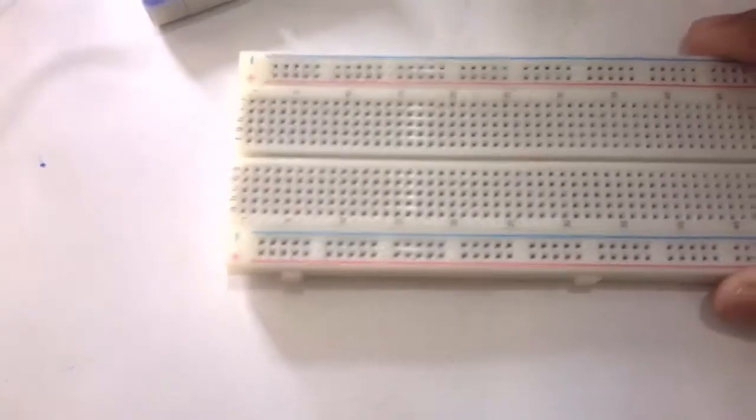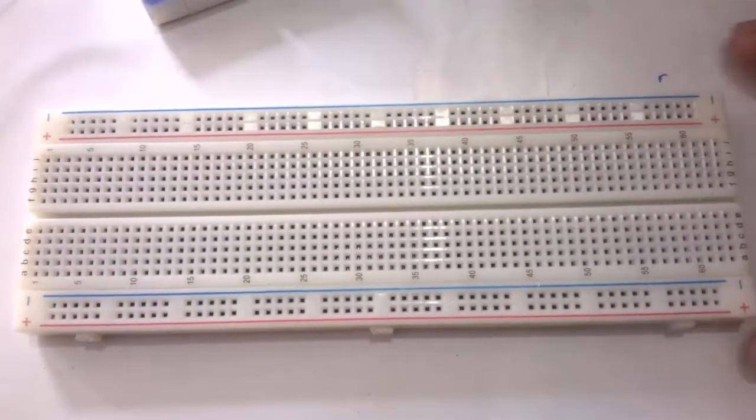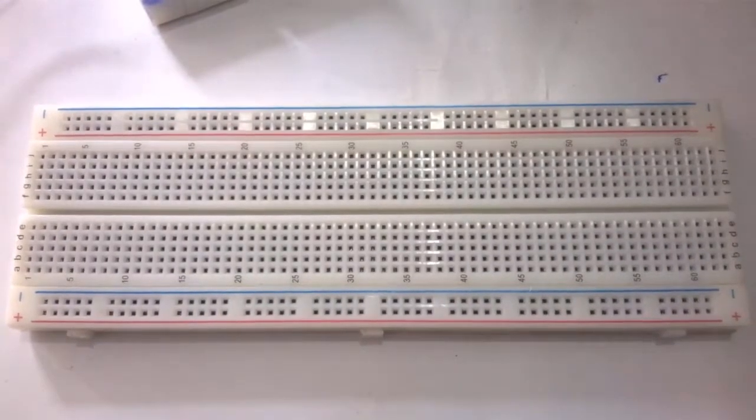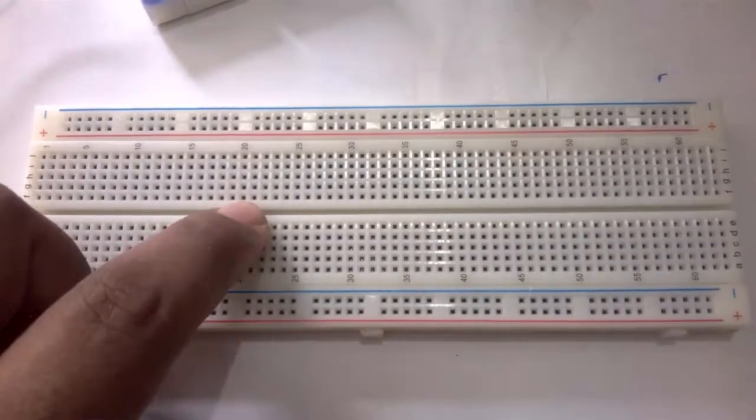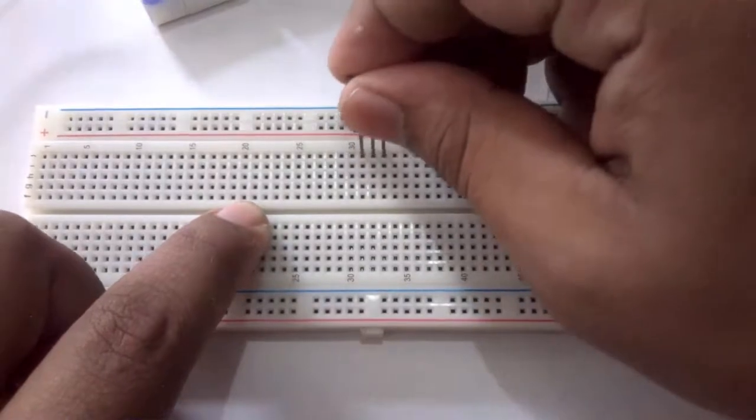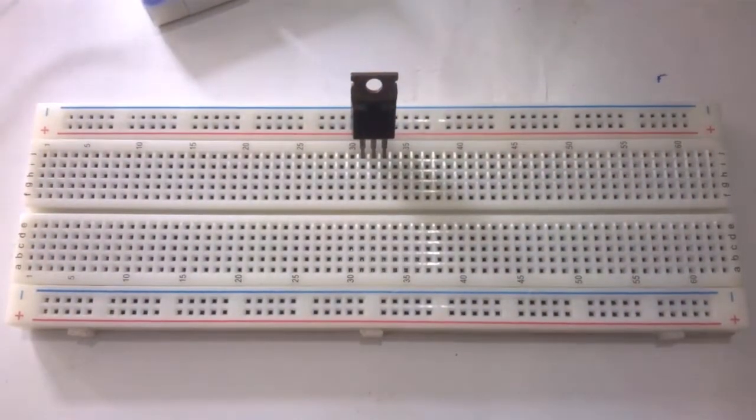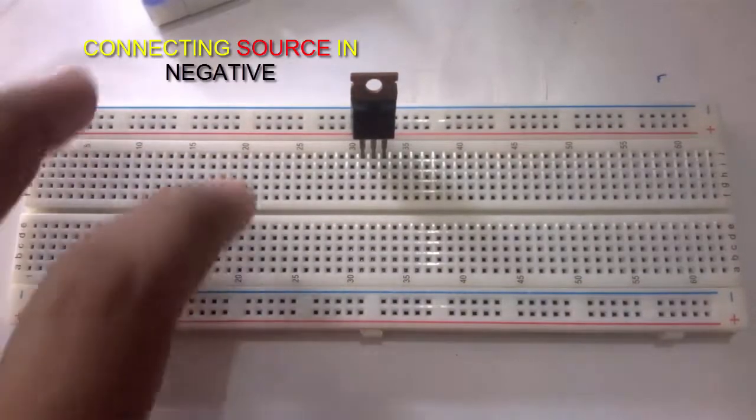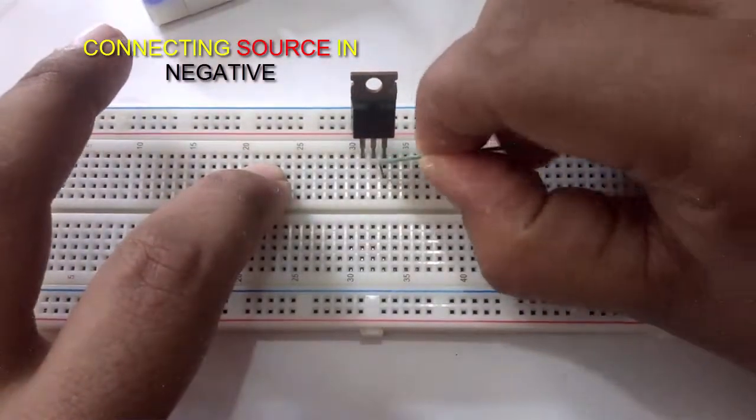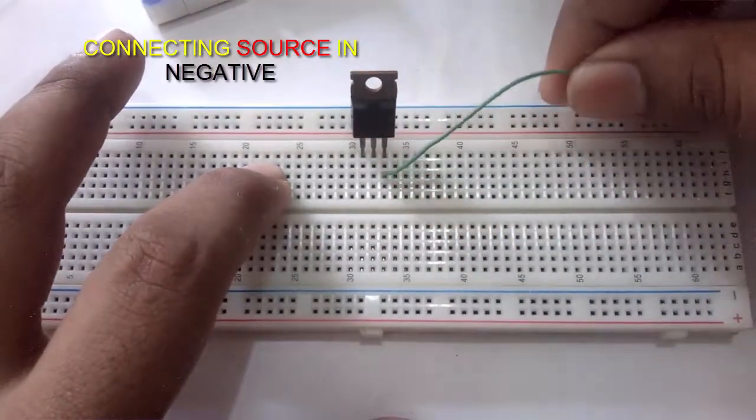First of all, the MOSFET is connecting in the breadboard. The last pin is the source and the source is connecting in the negative side of the breadboard.